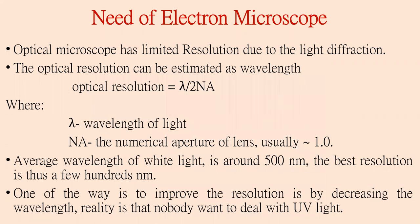Let us now discuss the need for an electron microscope. As discussed, the optical microscope has limited resolution due to light diffraction. The optical resolution of a microscope can be estimated by the formula: optical resolution equals lambda divided by 2 times NA, where lambda is the wavelength of light and NA is the numerical aperture of the lens, usually taken as one. The average wavelength of white light is around 500 nanometers, and the best possible resolution is thus a few hundreds of nanometers or microns.